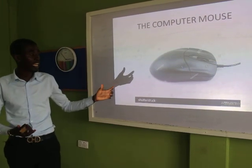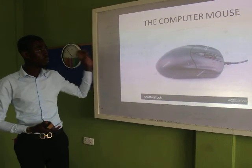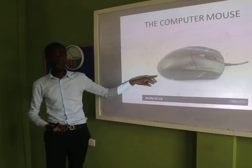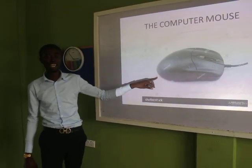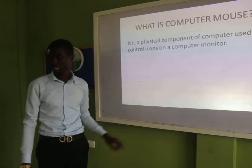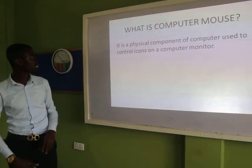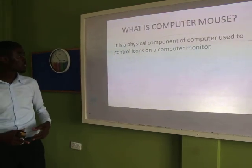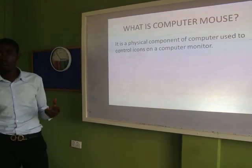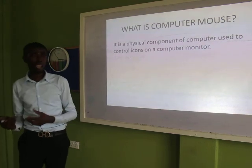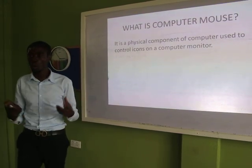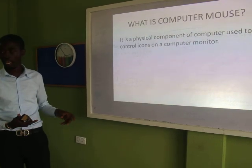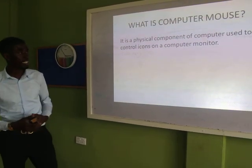So let us see how a mouse looks like and what a mouse is. What you can see on the screen is called a mouse — a computer mouse, not an animal mouse. When we talk of a mouse, it is a physical component of the computer, used to control icons on the computer monitor. It is sometimes also used as a pointer on the computer screen. If you want to point to an icon on the computer, you use the mouse to point at it.